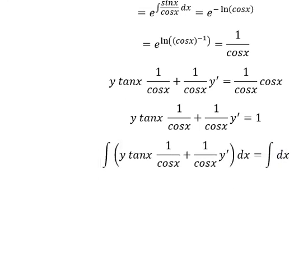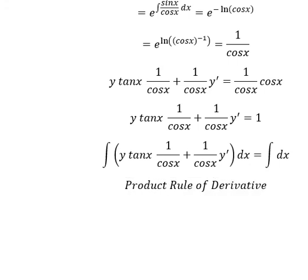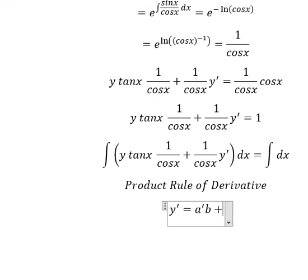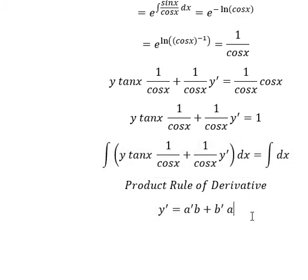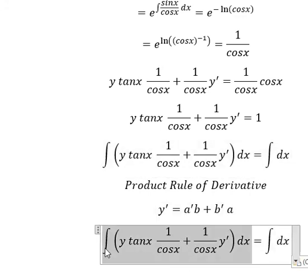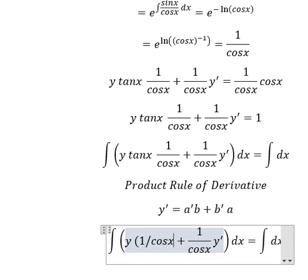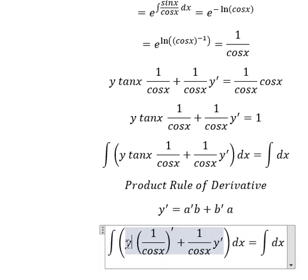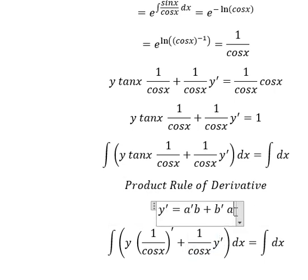We can use the product rule of differentiation: the first derivative of (a·b) equals the first derivative of a multiplied by b, plus the first derivative of b multiplied by a. Looking carefully, we identify the matching terms, so the integration of this expression gives us y equals a·b.